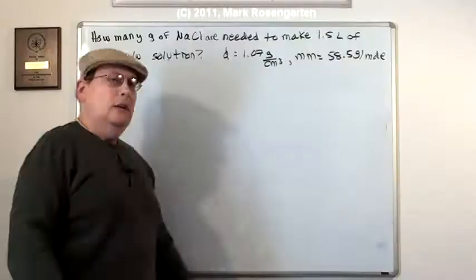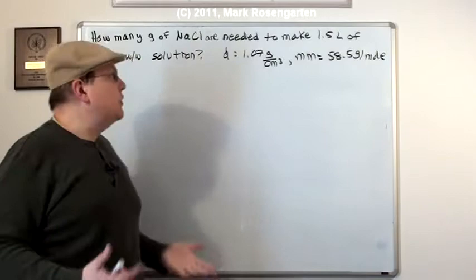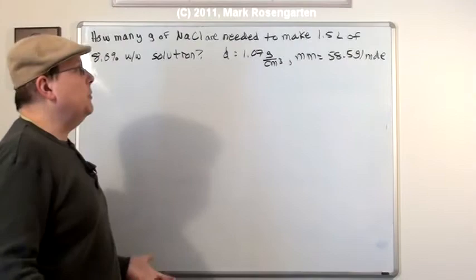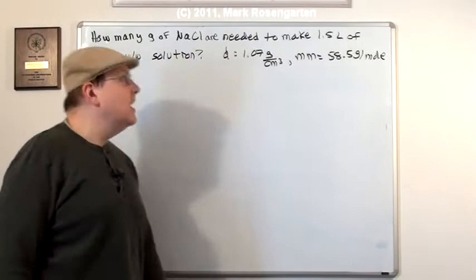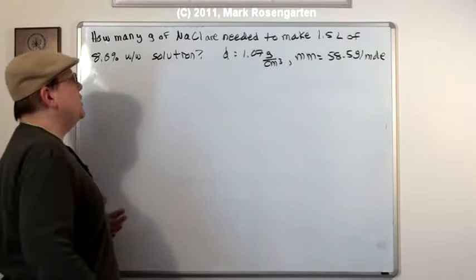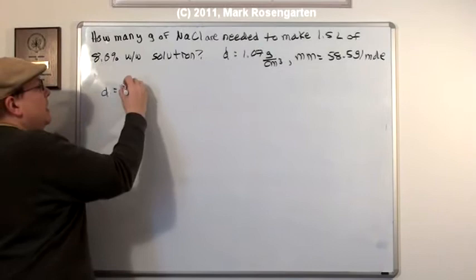OK. Now, if the salt is going to make up 8.0% of the weight of the solution, the first thing we need to do is find out how much this 1.5 liters of solution weighs. And then we're simply going to take 8.0% of that. And the reason we can do this is because it's a weight in weight solution. So, we take density equals mass over volume. We're trying to find the mass, so we multiply both sides by volume to cancel it out. Now we plug in the volume,